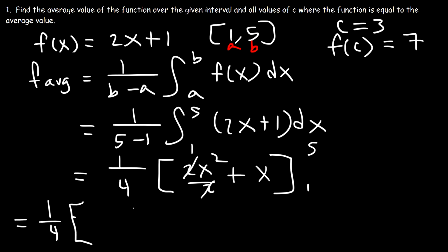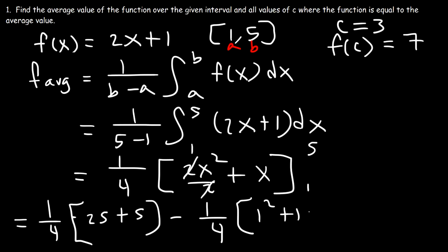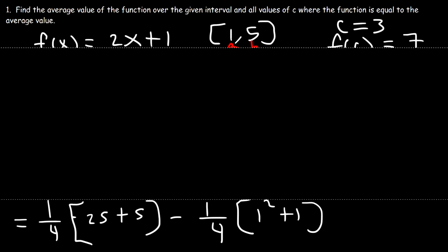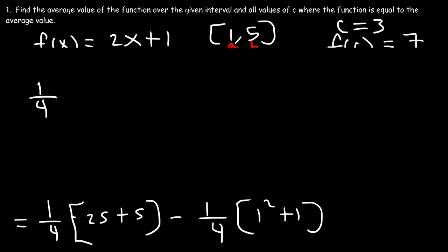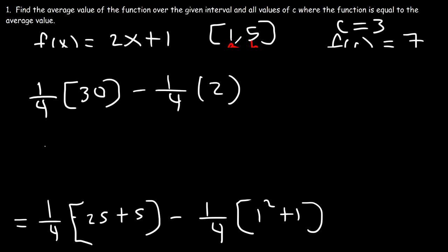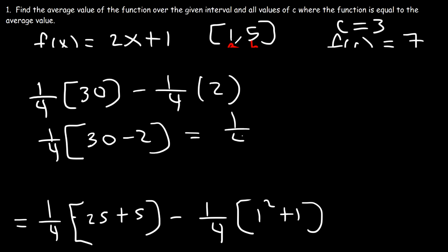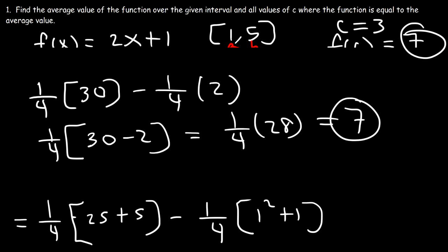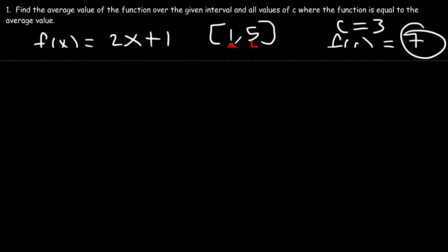We can cancel the 2. Plugging in 5: 5 squared is 25 plus 5. Minus plugging in 1: 1 squared plus 1. That gives 25 plus 5 is 30, and 1 plus 1 is 2. Factoring out 1 fourth: 30 minus 2 is 28, and 1 fourth of 28 is 7. The average value equals the average y value in the interval.